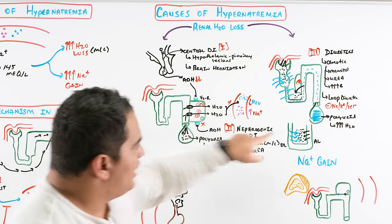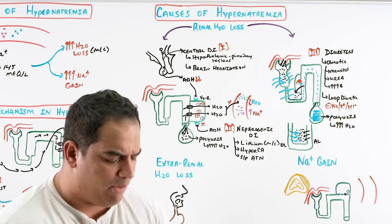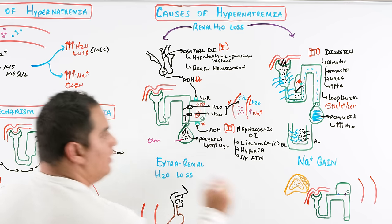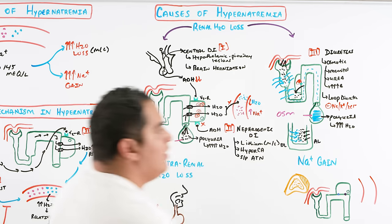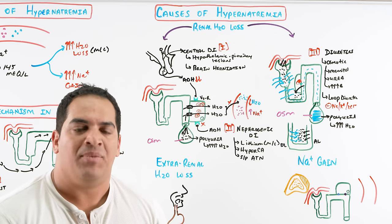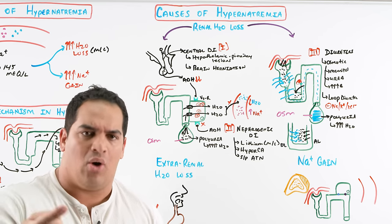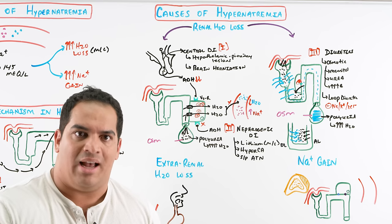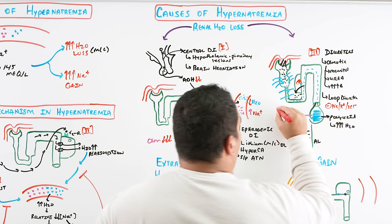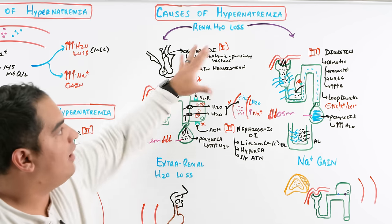An important point: when you have lots of water dumping into the urine — polyuria — that urine has lots of water, which dilutes the solutes. So the urine osmolality will be very low. In contrast, when little water is in the urine it's concentrated and osmolality is high. This distinction will matter for diagnosis.